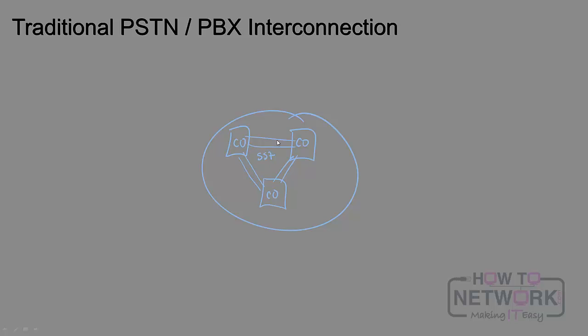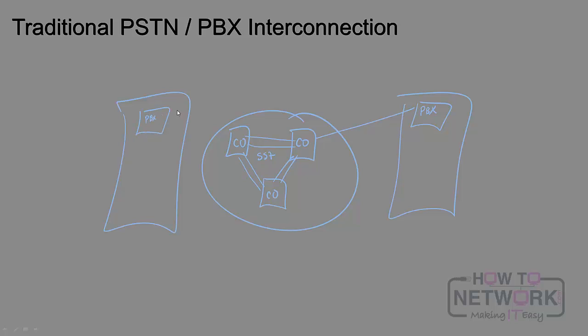When you have a location or business with a PBX, there's a connection to the central office carried over what we call a local loop. Typically this could be an ISDN PRI, a POTS line, a BRI, or a SIP trunk in modern times. We've got these local loops — we'll use ISDN or T1 as the example here.